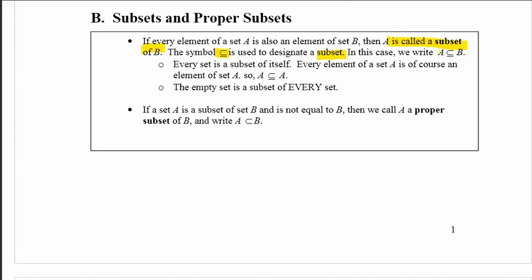So we could write A is a subset of B. Here are some things that you need to consider. Every set is a subset of itself, so A is a subset of A. Also, the empty set is a subset of every set.